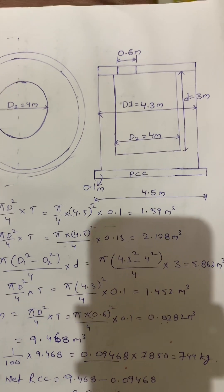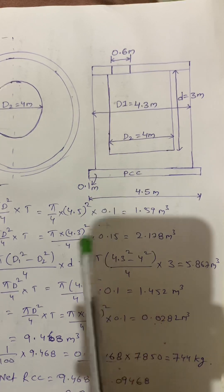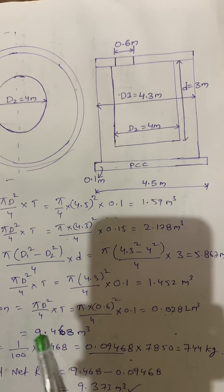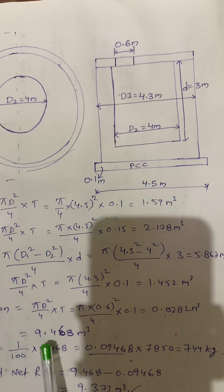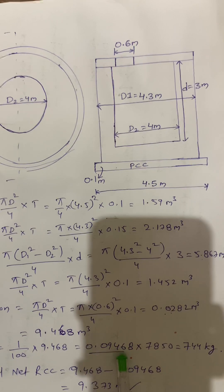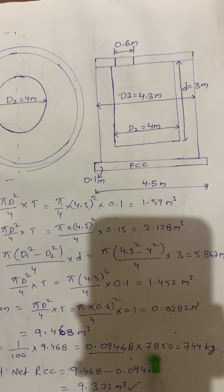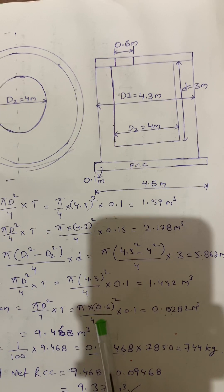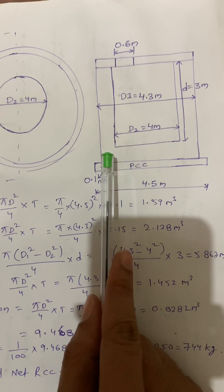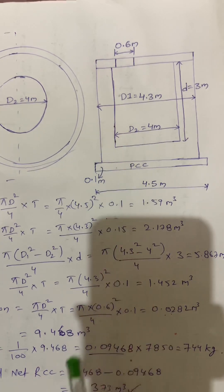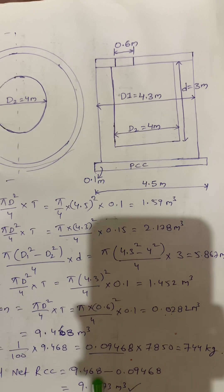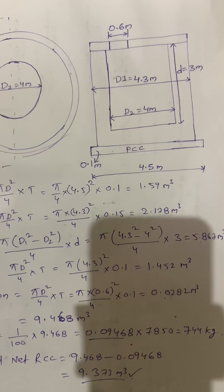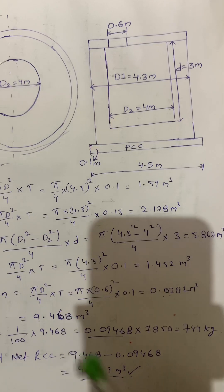If you want the net RCC — the exact concrete quantity separating reinforcement from concrete — we deduct steel. Considering steel at 1% of RCC: 1/100 × 9.468 = 0.09468 meter cube. Multiplying by the density of steel 7850 gives 744 kg of steel. Net RCC = 9.468 − 1% of 9.468 = 9.373 meter cube. That is the net RCC value of this circular tank.